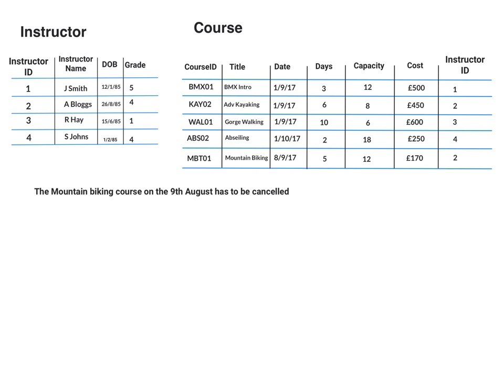So if we look at this example: the mountain biking course on the 9th of August has to be cancelled. The first part of the statement is to specify the table from which it's to be deleted, so we would say DELETE FROM, and the table is called course.